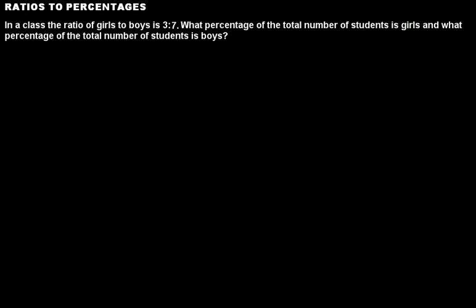Here is one problem: in a class the ratio of girls to boys is 3:7. You have to calculate two percentages — the percentage of girls in this class and the percentage of boys — and the information given is the ratio of girls to boys, which is 3:7.